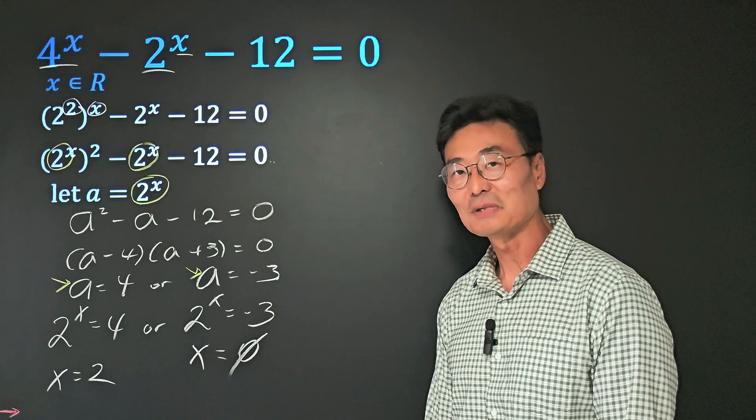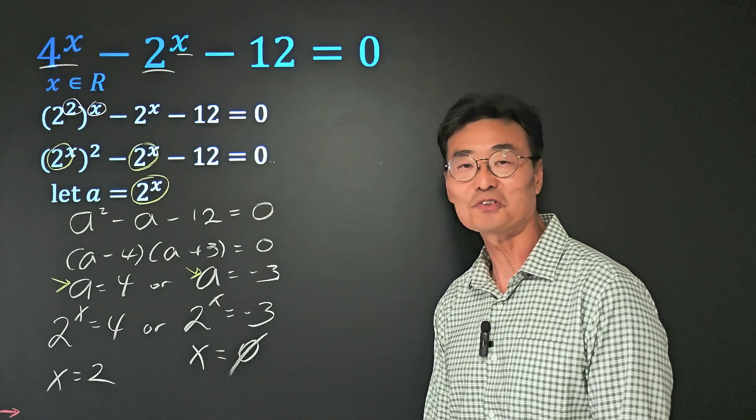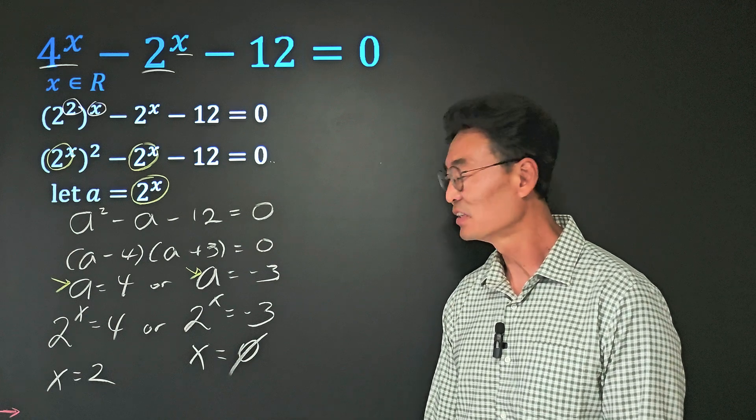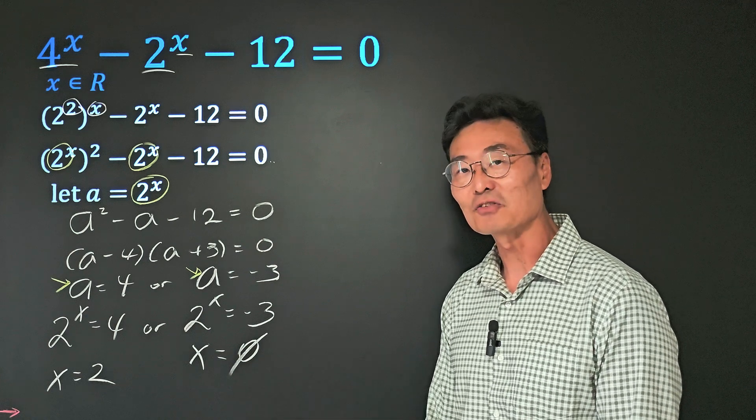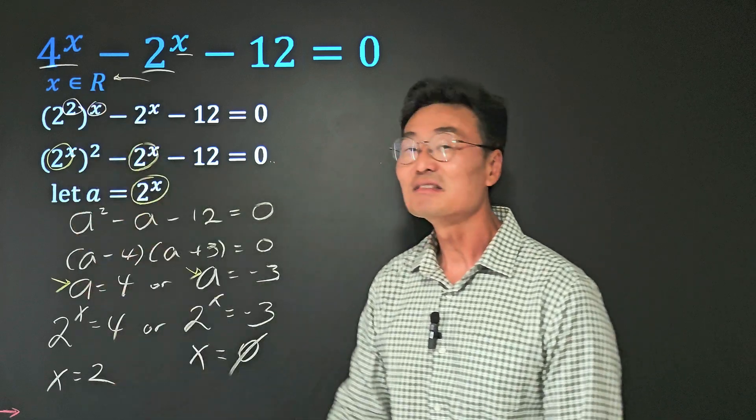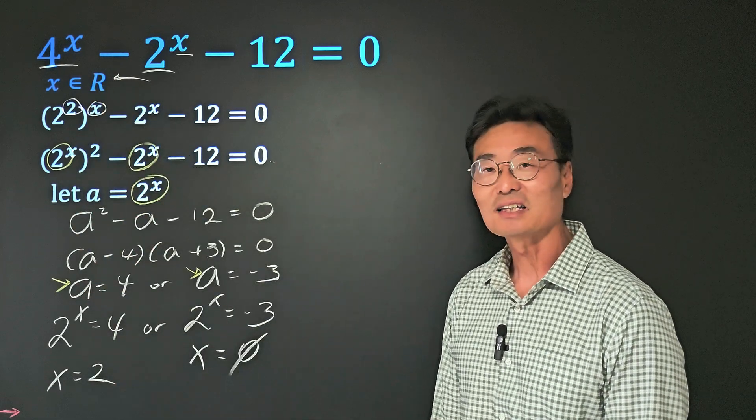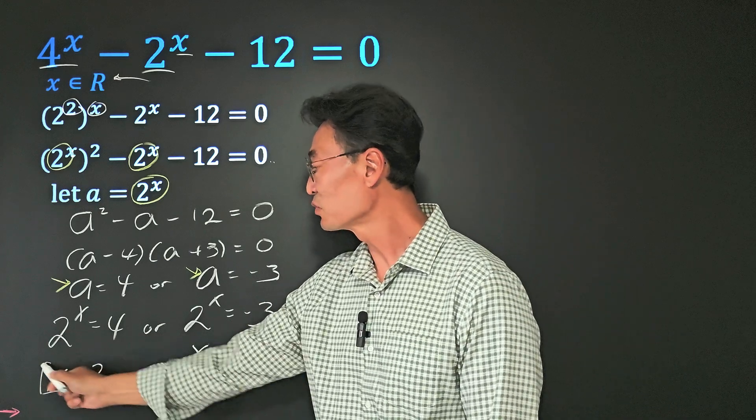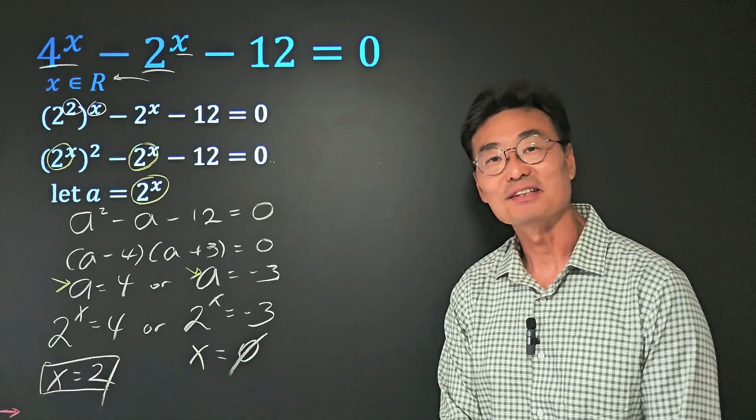No real solution. As a complex solution, of course there is. But at this level in high school, 9th or 10th graders, they don't solve for complex solutions. They only solve for real solutions. And the directions did say we want the x in real numbers only. Therefore, our final answer is x = 2.